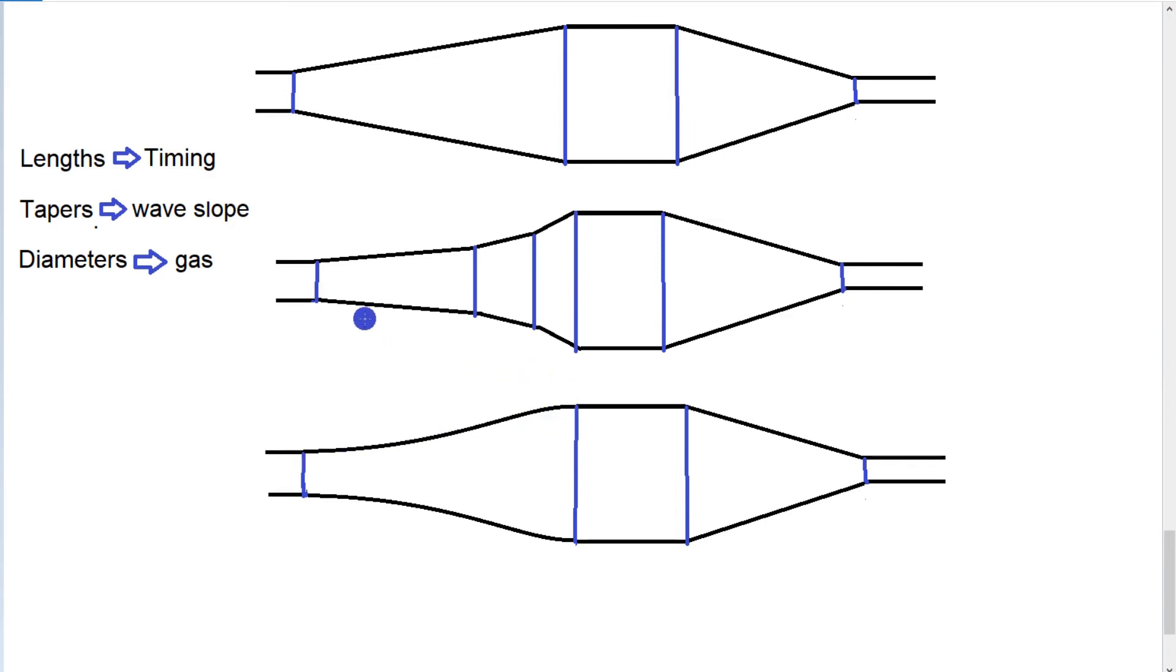And we can assess what's going on by looking at the ends of the pipe. If we've got a slow taper at this end of the pipe and then the taper is high at this end of the pipe, well it means we're pulling a strong wave at the lower RPM range.